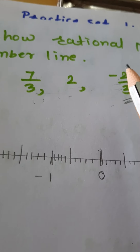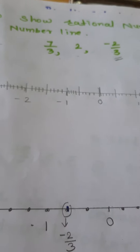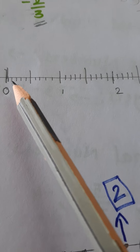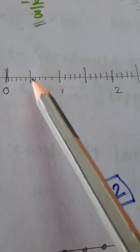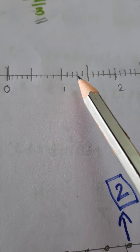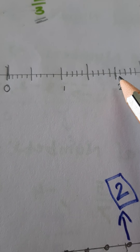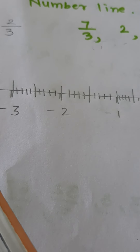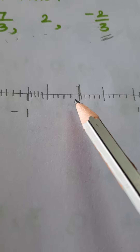Now let's turn towards how to show rational numbers on a number line. Here I have drawn one number line — it is like a scale. If you observe your scale, you find that it starts with 0 and 10 equal parts are there. In the number line, 0 is in the middle. The right side of 0 has all positive numbers and the left side of 0 has all negative numbers. There are 10 equal parts between 0 to 1.